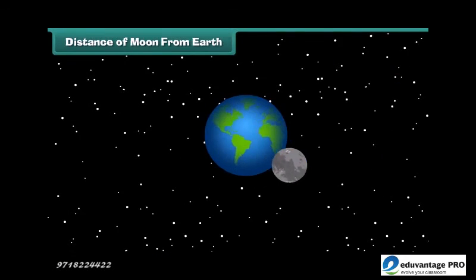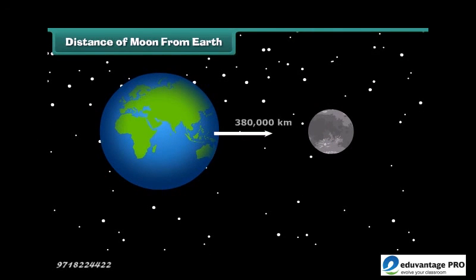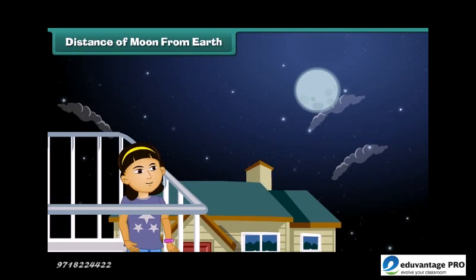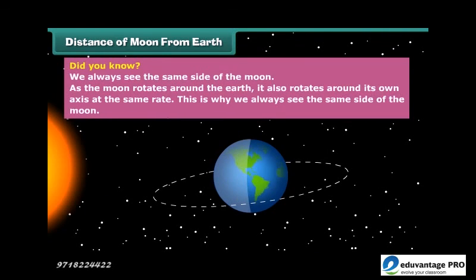The moon is an average of about 380,000 kilometers from Earth, which is pretty close. Because of its proximity, we don't need a telescope to see features on the moon's surface from the Earth. Did you know we always see the same side of the moon? As the moon rotates around the Earth, it also rotates around its own axis at the same rate. This is why we always see the same side of the moon.